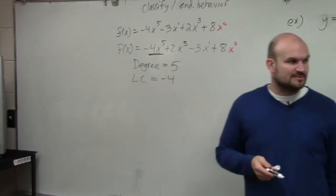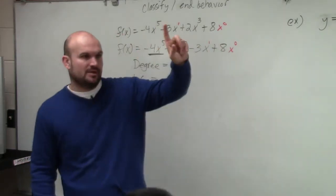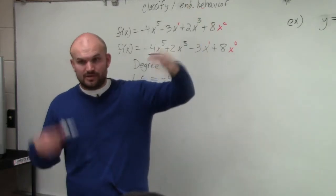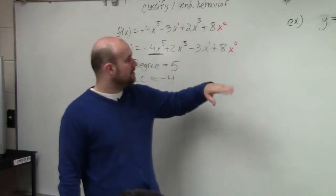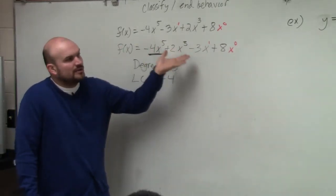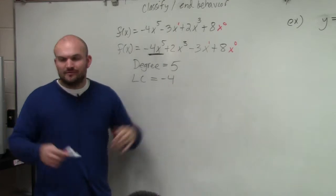Then we look at the number of terms. We only classified polynomials by number of terms that had one term, which was a monomial, two terms, which is a binomial, and three terms, which is a trinomial. You guys should have all of that in your notes. Here, we have four terms. So we just classify this saying it's a polynomial of four terms, and a polynomial to the fifth degree. We actually don't have a name of classification for it.